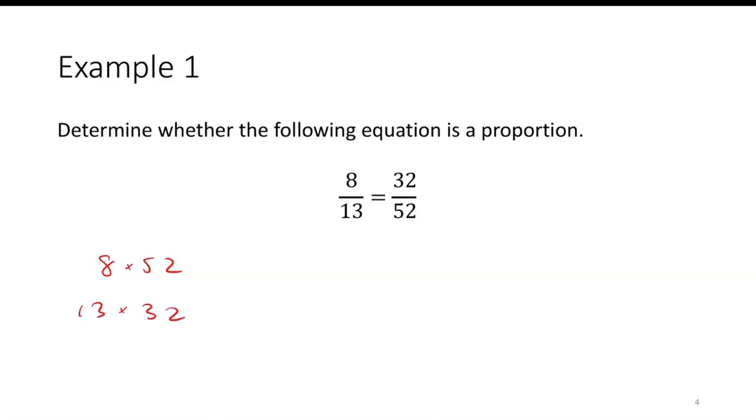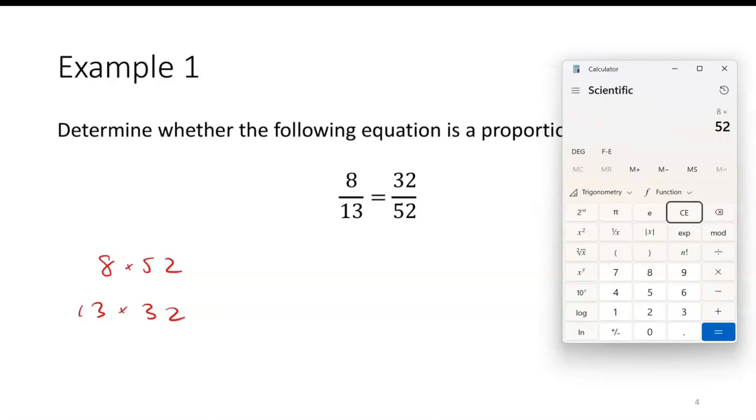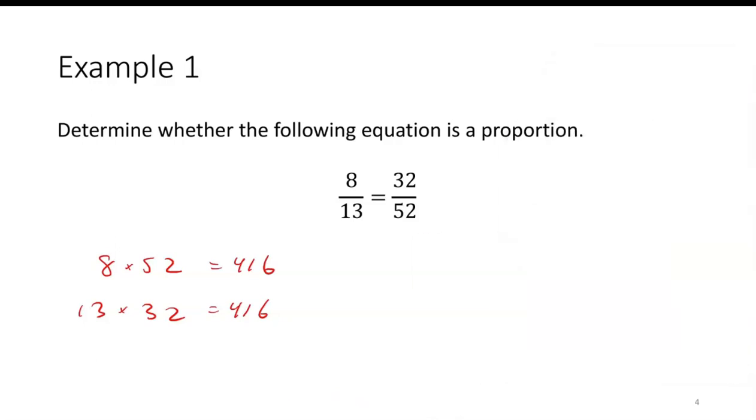Let's just do it this way. 8 times 52 is 416. 13 times 32 is also 416. So in other words, this is a proportion.